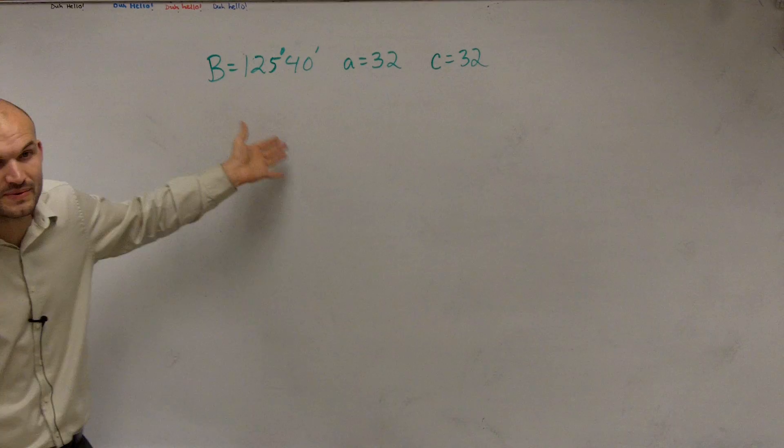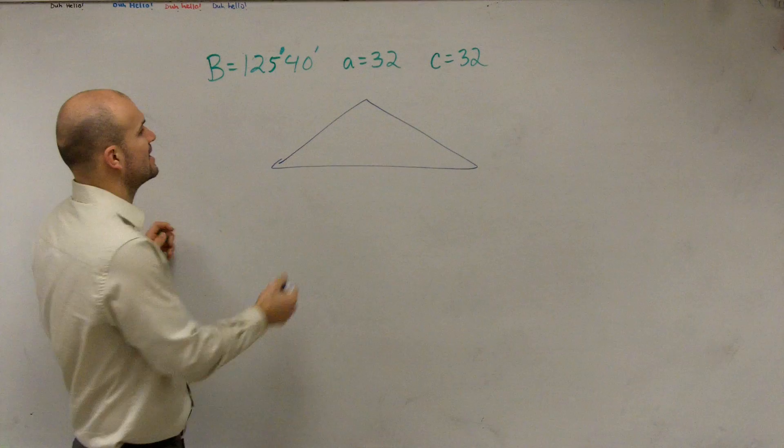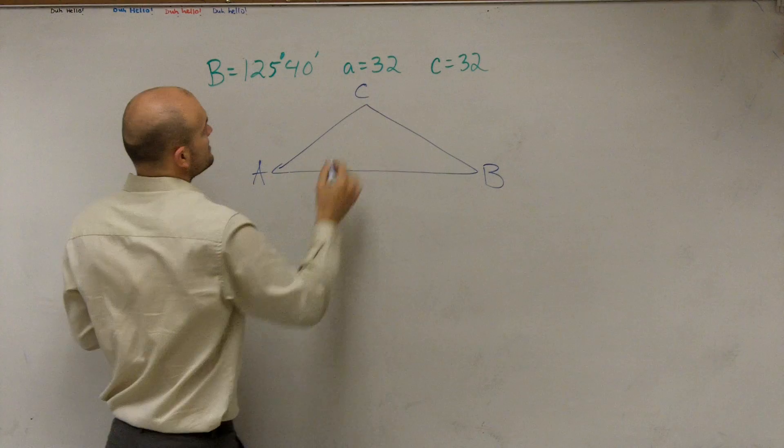So for this problem, the first main important thing is we need to draw the triangle. And ladies and gentlemen, the best thing is just to create a triangle. But the one thing is we notice that, let's just go A. It doesn't really matter how you label it. A, B, C.